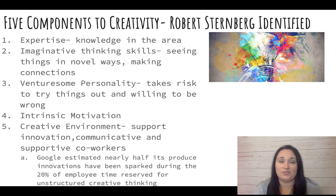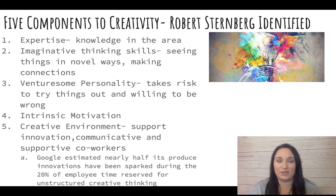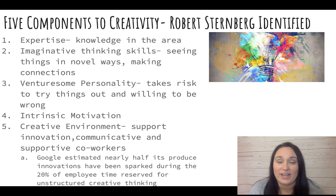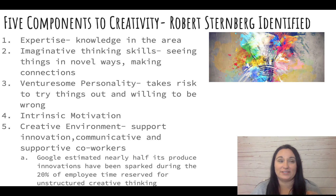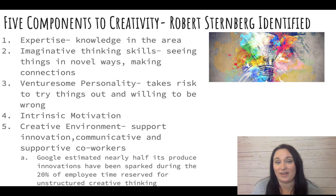There are five components to creativity, according to Robert Sternberg and his colleagues: expertise, imaginative thinking skills, venturesome personality — so taking risks — intrinsic motivation, so having that joy and interest just within you and not being forced to do something creatively. And a creative environment. Google has estimated that nearly half of its product innovations have come from the 20% of employee time that is reserved and unstructured, just for creative thinking. And they think that that's been really valuable to them.